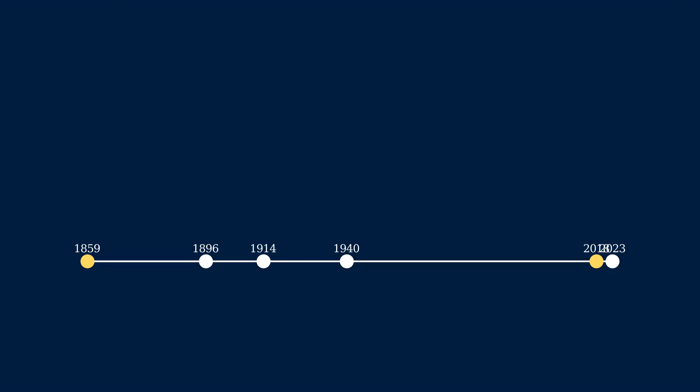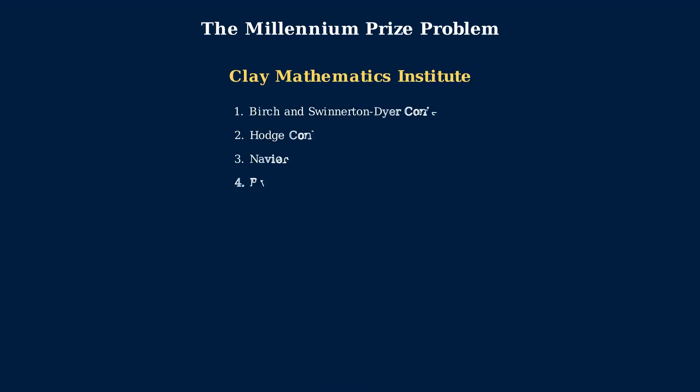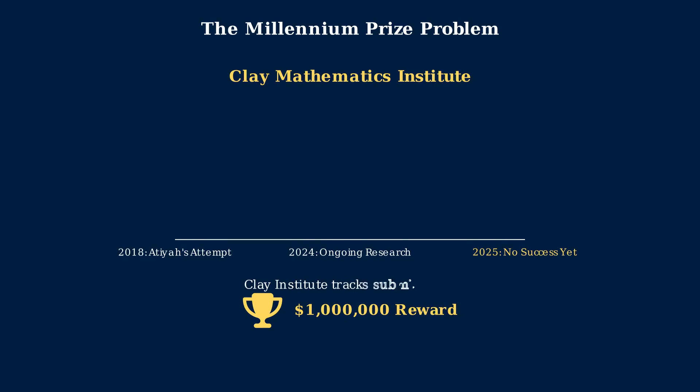And it sits at the heart of the Clay Mathematics Institute's Millennium Prize problems, with a $1 million reward for the first correct proof. What prize could inspire generations of mathematicians to chase a single proof? The Clay Mathematics Institute designated the Riemann hypothesis as one of their seven Millennium Prize problems. A correct proof earns a $1 million reward. This highlights the problem's immense importance and difficulty. The Clay Institute continues to track submissions, though none have been successful as of 2025.